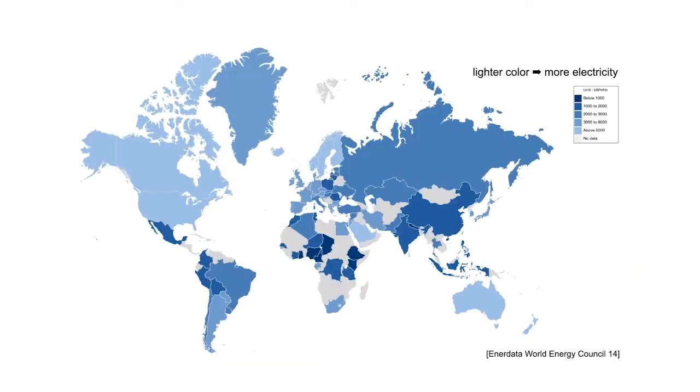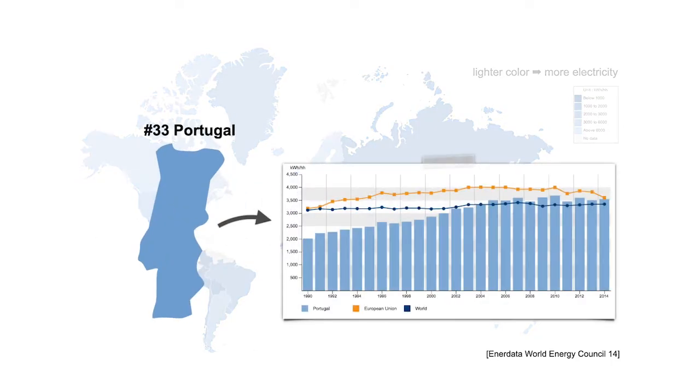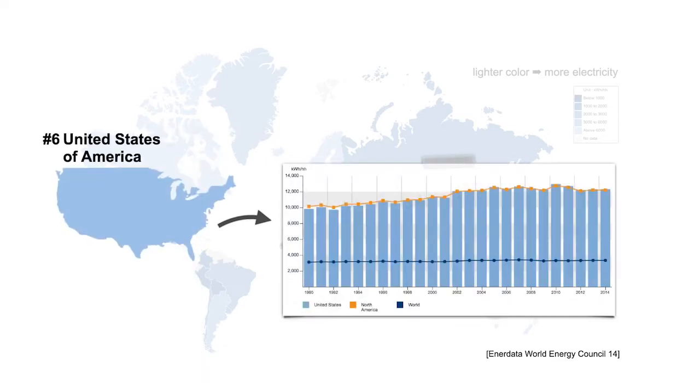If we look at the global electricity consumption, we can see that it averages around 3,350 kilowatt-hours per capita. And by looking at the trend over the last years, for example in Portugal, we can already see that the demand has constantly risen over the last decades.